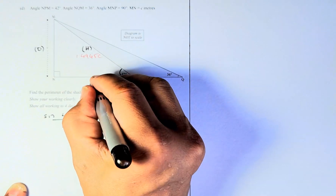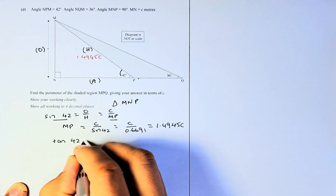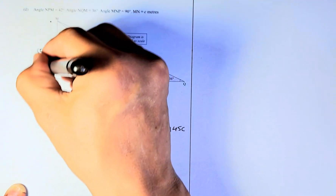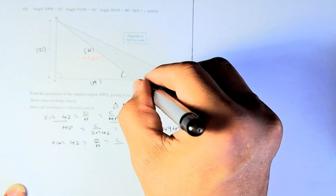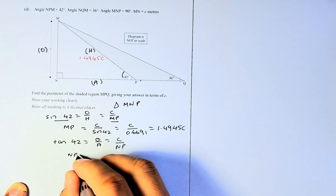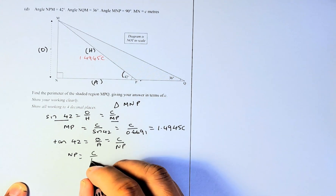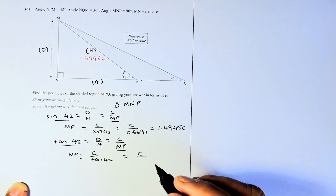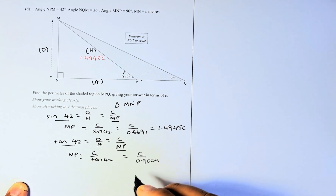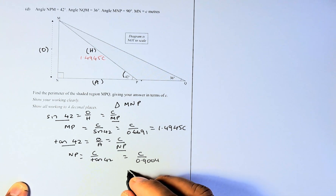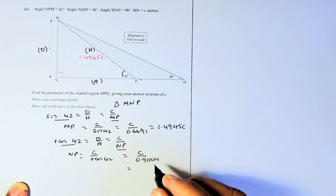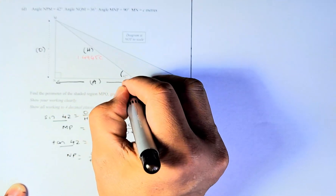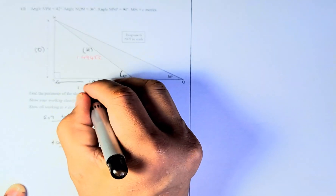This time NP is adjacent, so we use tangent: tangent 42 equals O over A, where O is C and A is NP. So NP equals C divided by tangent 42. Tangent 42 is 0.9004, and NP equals C divided by 0.9004, which gives 1.1106C. So that length is 1.1106C.